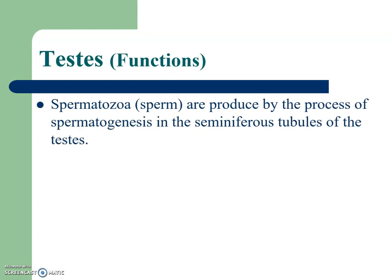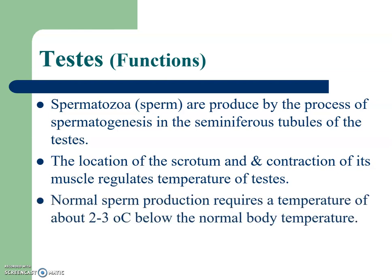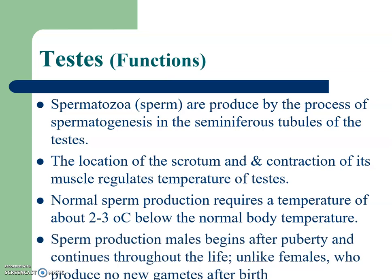Spermatozoa are produced by the process of spermatogenesis in the seminiferous tubules of the testes. The location of the scrotum and contraction of its muscles regulates the temperature of the testes. Normal sperm production requires a temperature of about 2 to 3 degrees Celsius below normal body temperature — that is the actual function of the scrotum as well as the testes. Sperm production in males begins after puberty and continues throughout life, unlike females who produce no new gametes after birth.